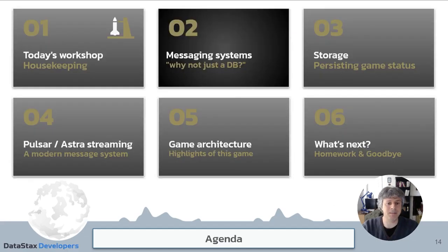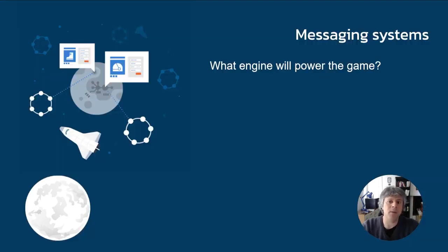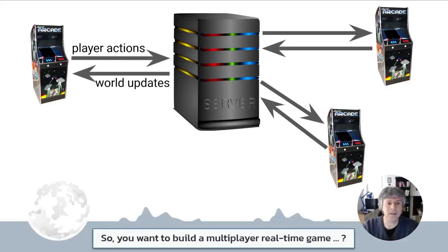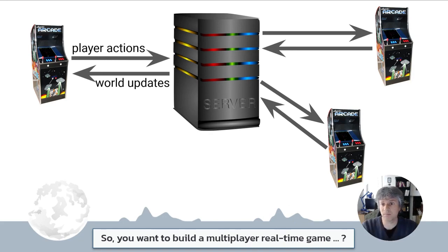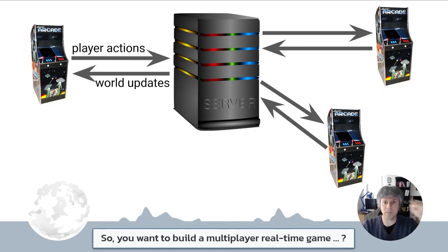Gaming. Let's start with the most important feature of today's game — messaging systems. What engine will power the game? What kind of game do we have in mind? Well, it's a multiplayer, real-time game. Very generally, the kind of architecture we have in mind is: there are clients that connect to a single server, and they exchange messages. In particular, the clients will send player actions — such as the player moving or any action the player on the client side might do — to the server.